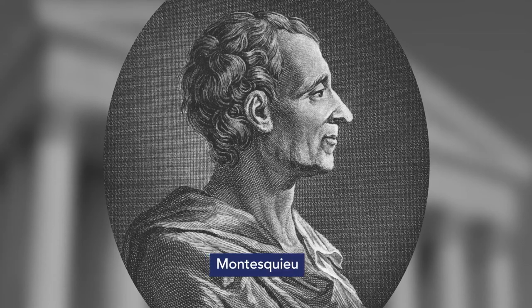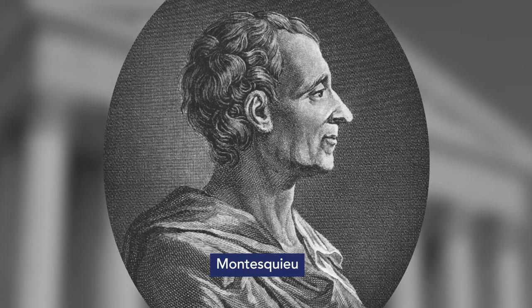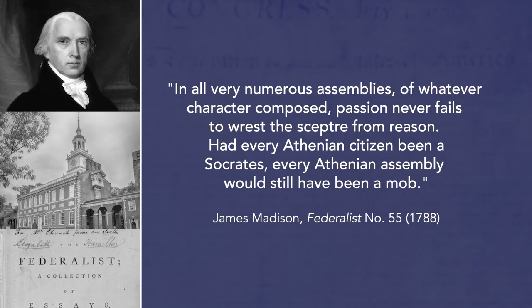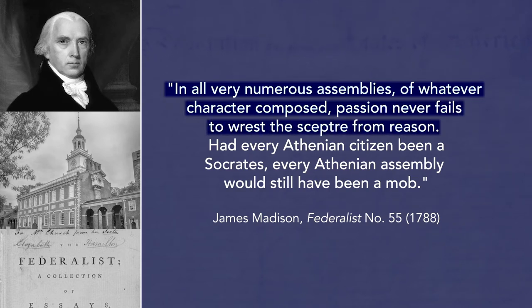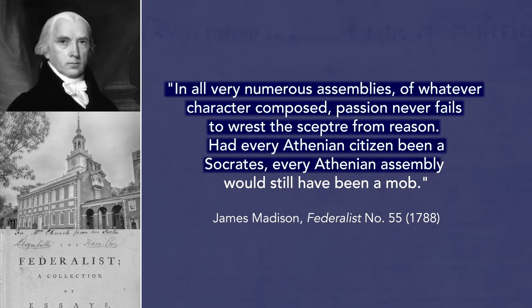Madison also read thinkers like Montesquieu, who insisted that in direct democracies like ancient Greece — with its large assembly where 6,000 people were required for a quorum — demagogues could easily whip up populist passions. In Federalist 55, Madison said: 'In all very numerous assemblies, of whatever characters composed, passion never fails to wrest the scepter from reason. Had every Athenian citizen been Socrates, every Athenian assembly would still have been a mob.'